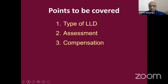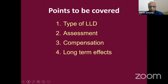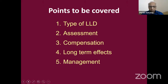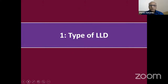The third point is how the body compensates for limb length discrepancy — if we don't manage it, what are the long-term consequences. The fourth point is the long-term effects, which is very important from an exam point of view, because the examiner will always ask why we need to correct it or why a small amount of limb length discrepancy can be managed without surgical treatment. And the last point is about management. Whatever is possible, we will try to cover in the 40-minute slot; the rest will be taken in a second session.